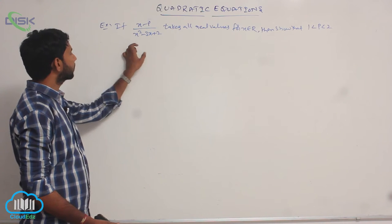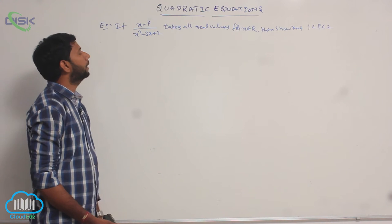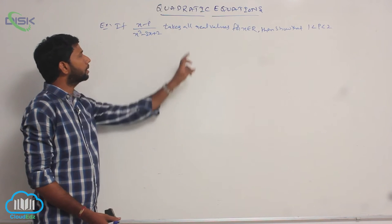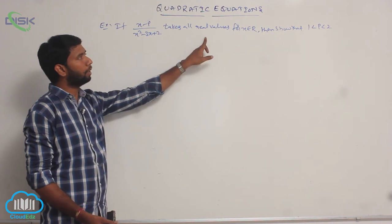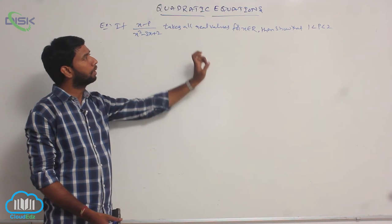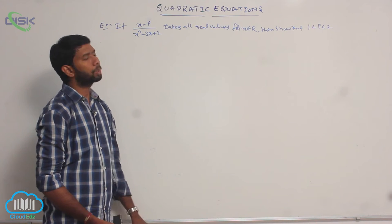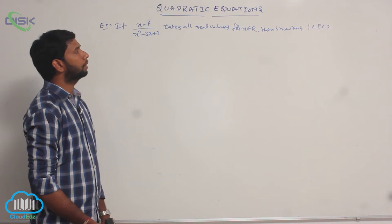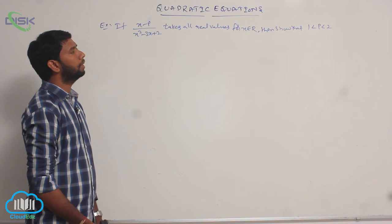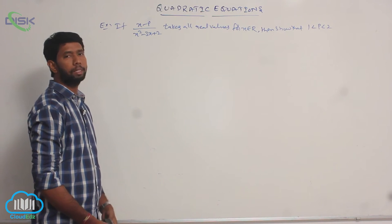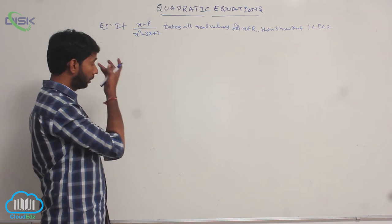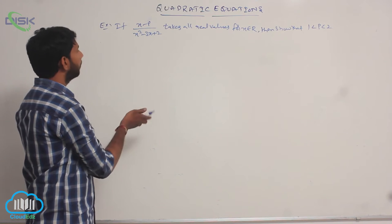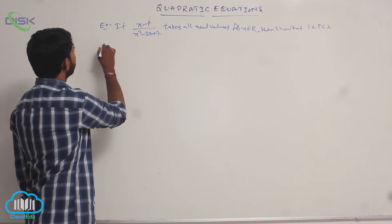Another example: if (x minus p) divided by (x squared minus 3x plus 2) takes all real values for x belonging to ℝ, then show that 1 less than p less than 2.